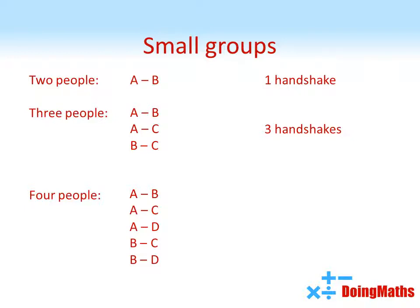Now person C has already shaken hands with A and B, so there's just D left for him. And now D has shaken hands with everybody. So that's that done. It's taken six handshakes for a group of four.